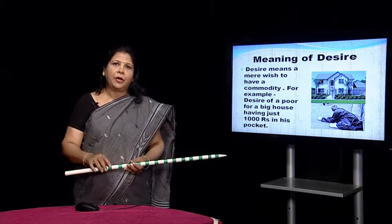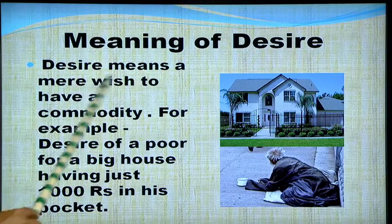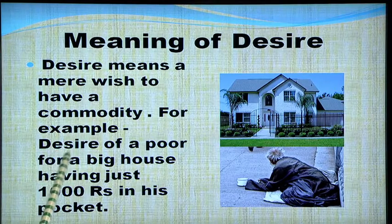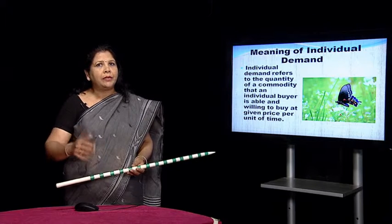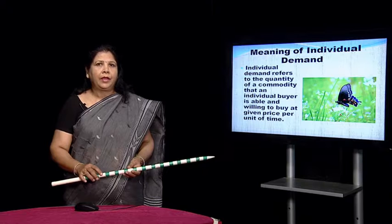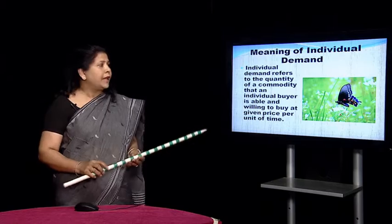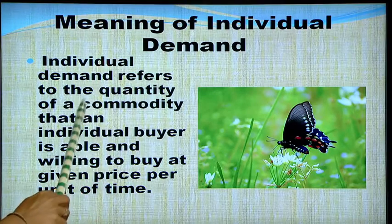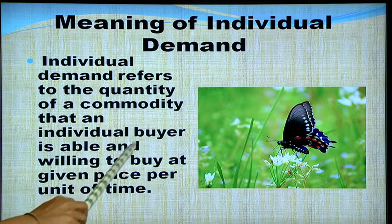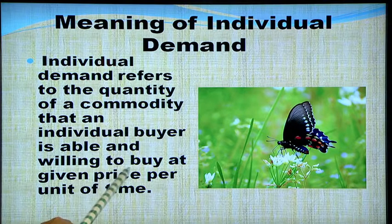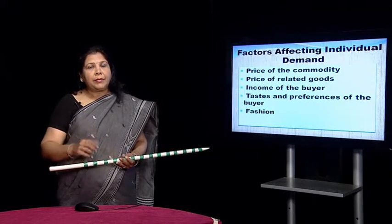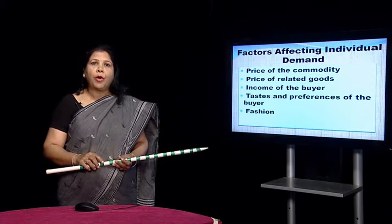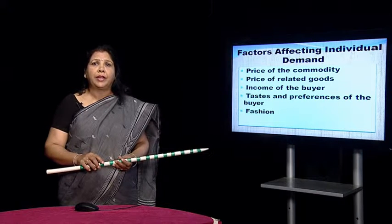How is demand different from desire? Desire means a mere wish to have a commodity. For example, the desire of a poor person for a big house having just rupees 1000 in his pocket. So how is this poor person able to convert his desire into demand? It is not possible. Individual demand refers to the quantity of a commodity that an individual buyer is able and willing to buy at a given price per unit of time.